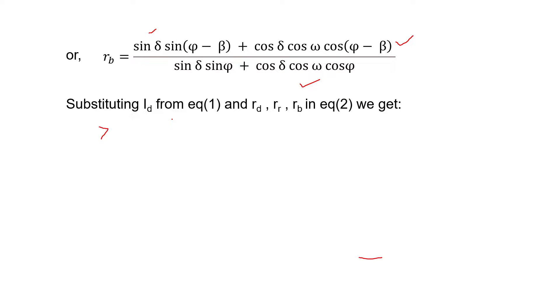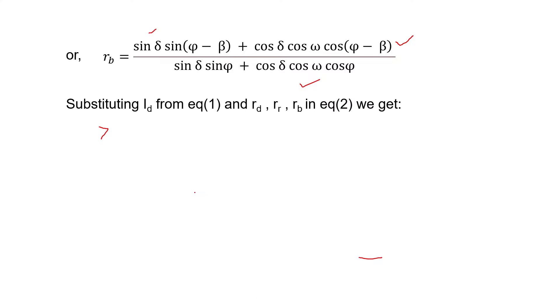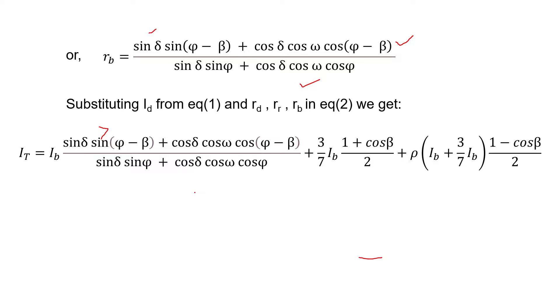After substituting Id from equation 1 and Rd, Rr, and Rb in equation 2, we put values of Ib, Rb, Id, Rd, Ib plus Id, Rr. We get this expression for It, the solar radiation on the tilted surface.